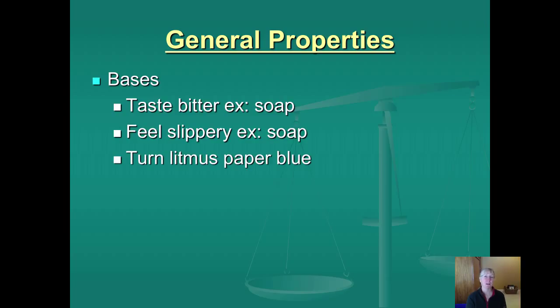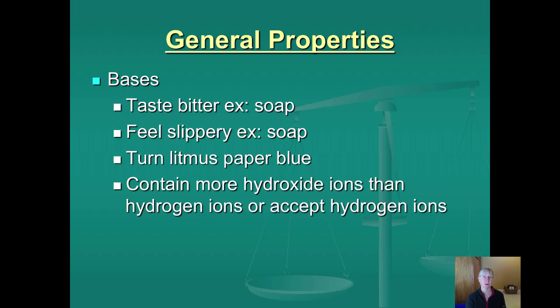If you have neutral litmus, I remember B is the letter that starts the word base and the word blue. So litmus paper turns blue. And we associate on pH paper the cooler colors, greens and blues, with basic or alkaline solutions.